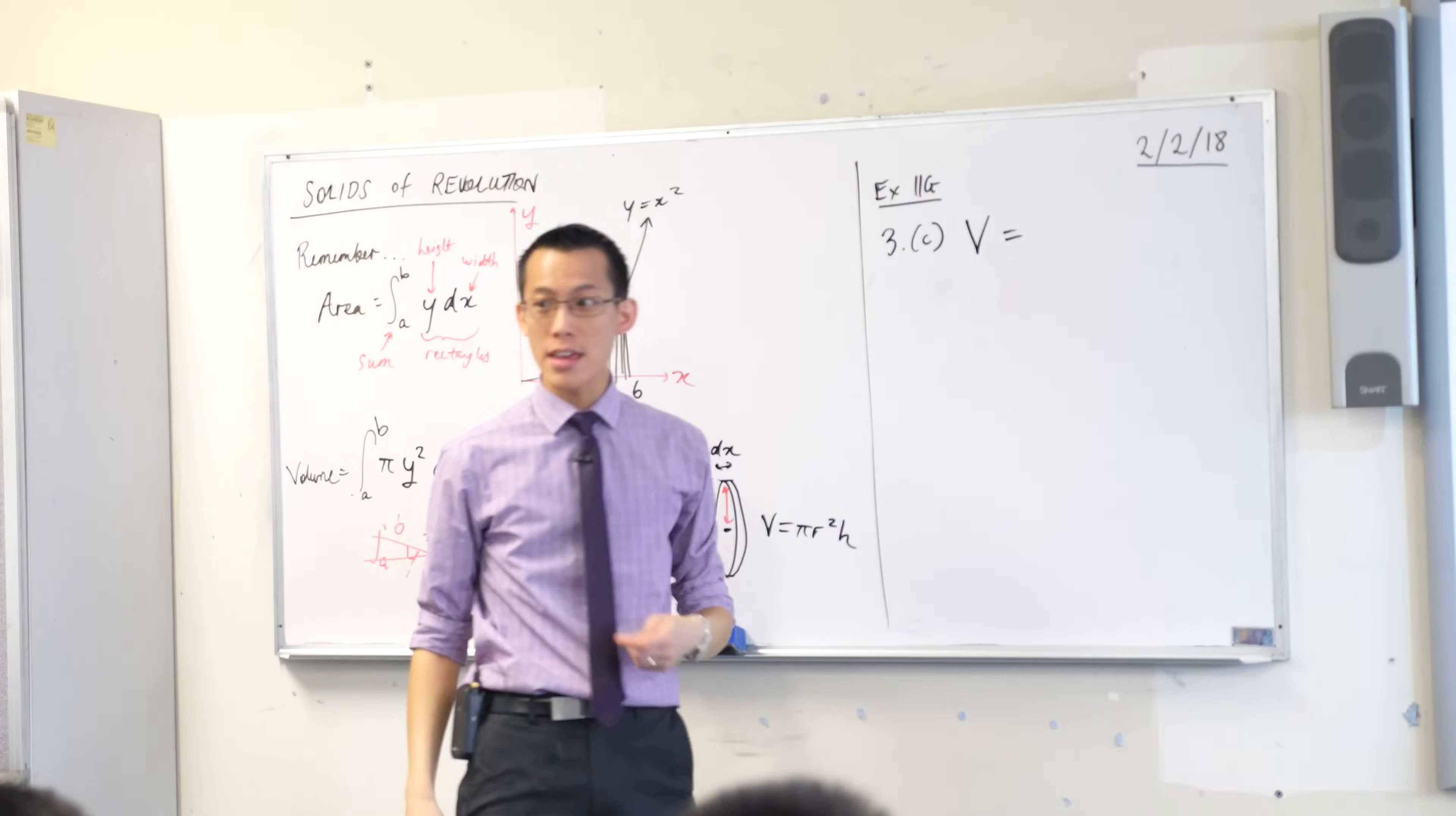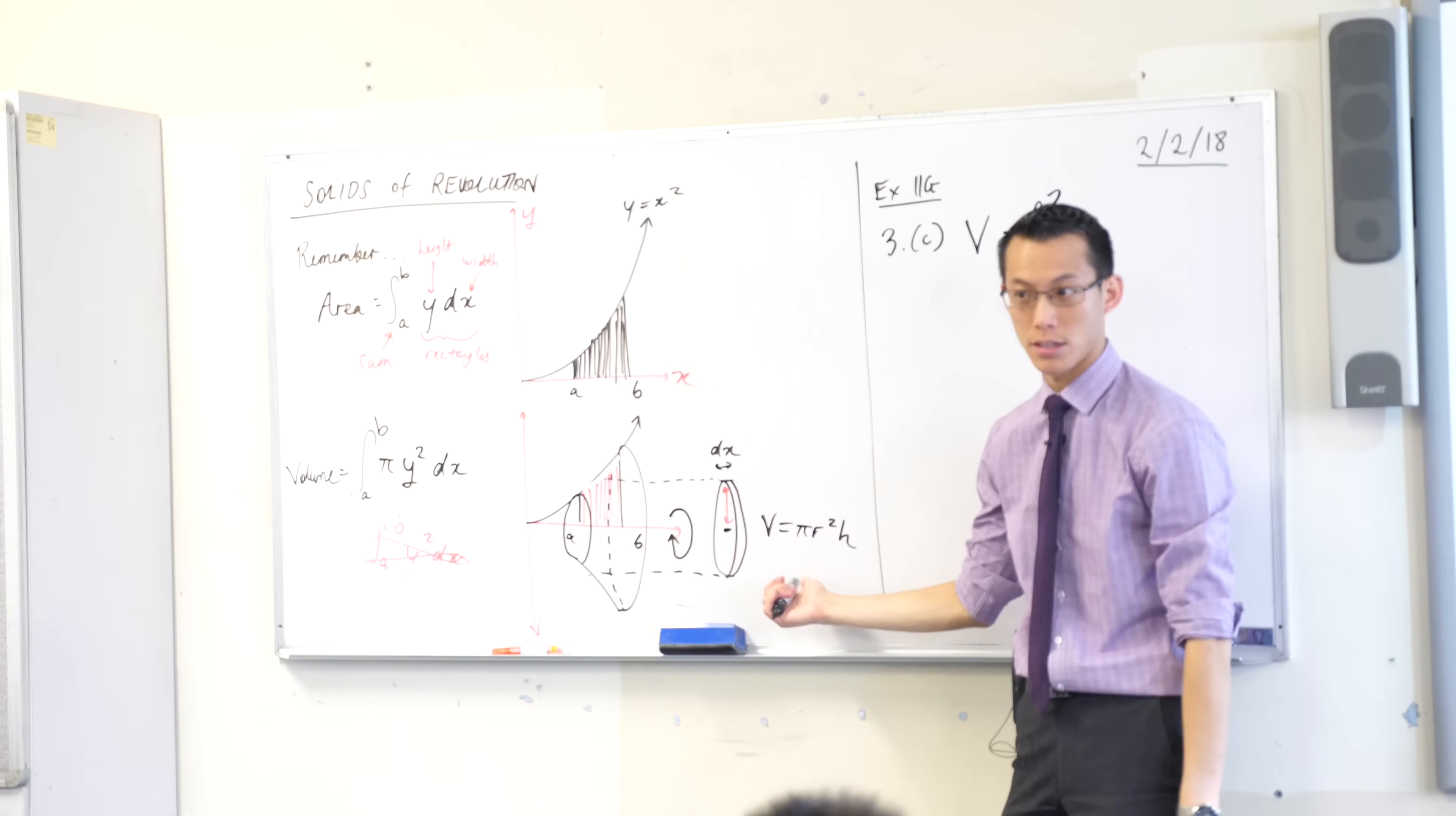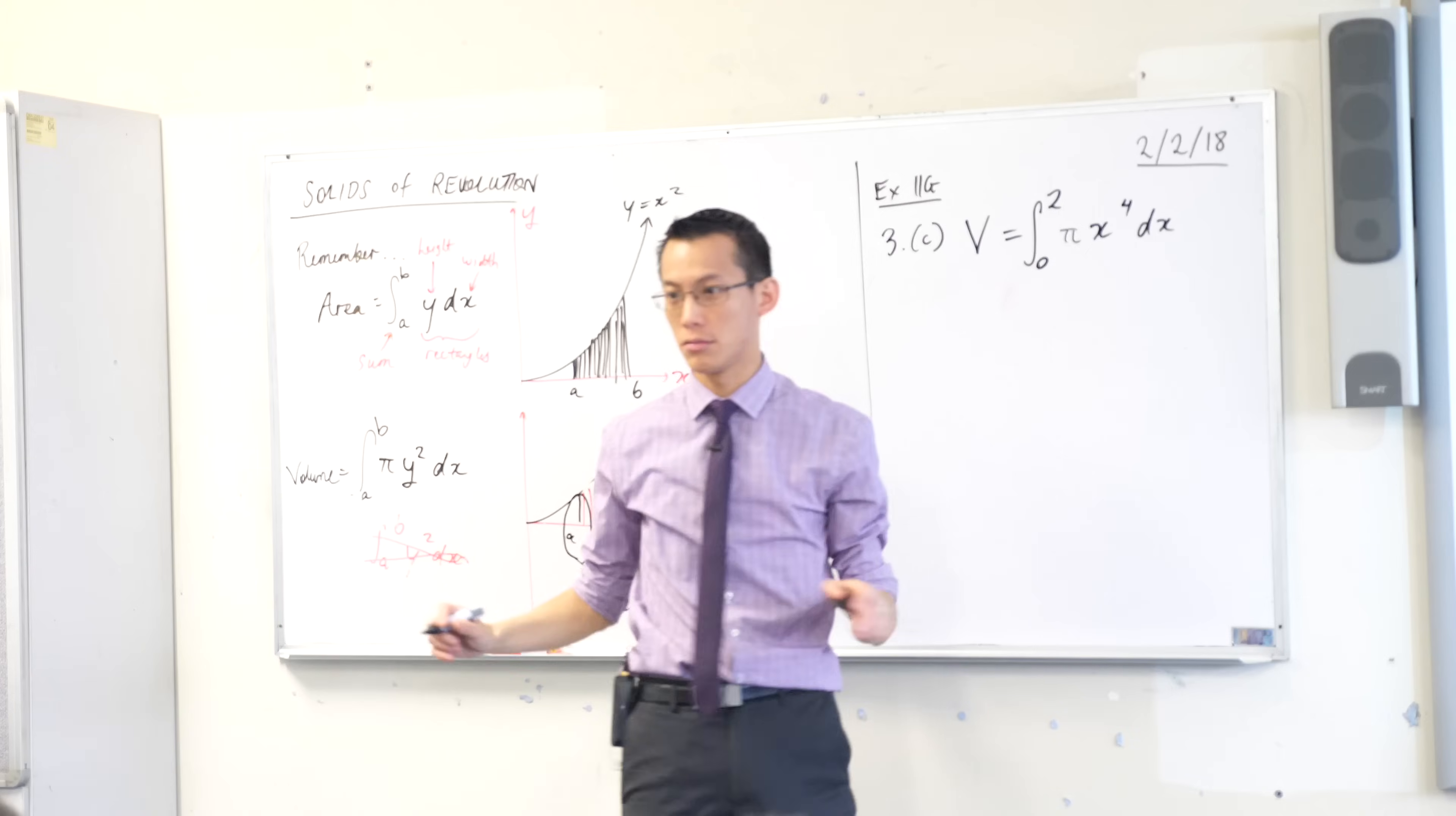For 3C, the first thing I will write is v equals because I am working out a volume. And then I begin to use this formula. Integral of, where are my boundaries, have a look at the diagram, 0 and 2, from 0 to 2. The thing that I am adding up is a bunch of cylinders, so the very first thing that appears in the cylinder formula is a pi. So I write down a pi. Now, the next piece is y squared. Well in this case, y is equal to x squared. So when I square everything, I get x to the power of 4 with respect to x. And that was it.